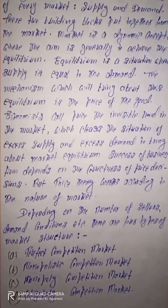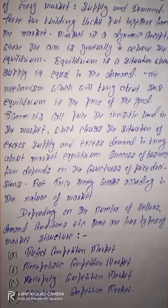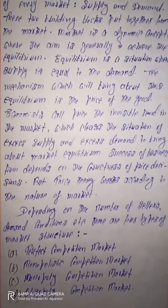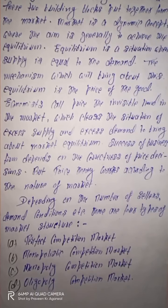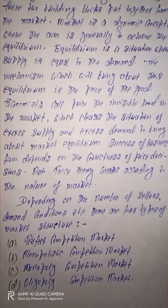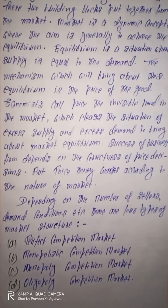किसी particular business की success depend करती है उसके price decision के correct होने पर। जितने correct way में price को लेकर decision follow किया जाएगा firm की तरफ से, उतनी ही उसकी success ensure होती चली आती है। जब हम price theory की बात करते हैं तो price theory depend करती है nature of market पर। Market mechanism के basis पर price decide किया जाता है। Number of sellers और demand conditions के basis पर हम market को चार types में divide कर सकते हैं: perfect competition, monopolistic competition, monopoly competition, और oligopoly competition market।